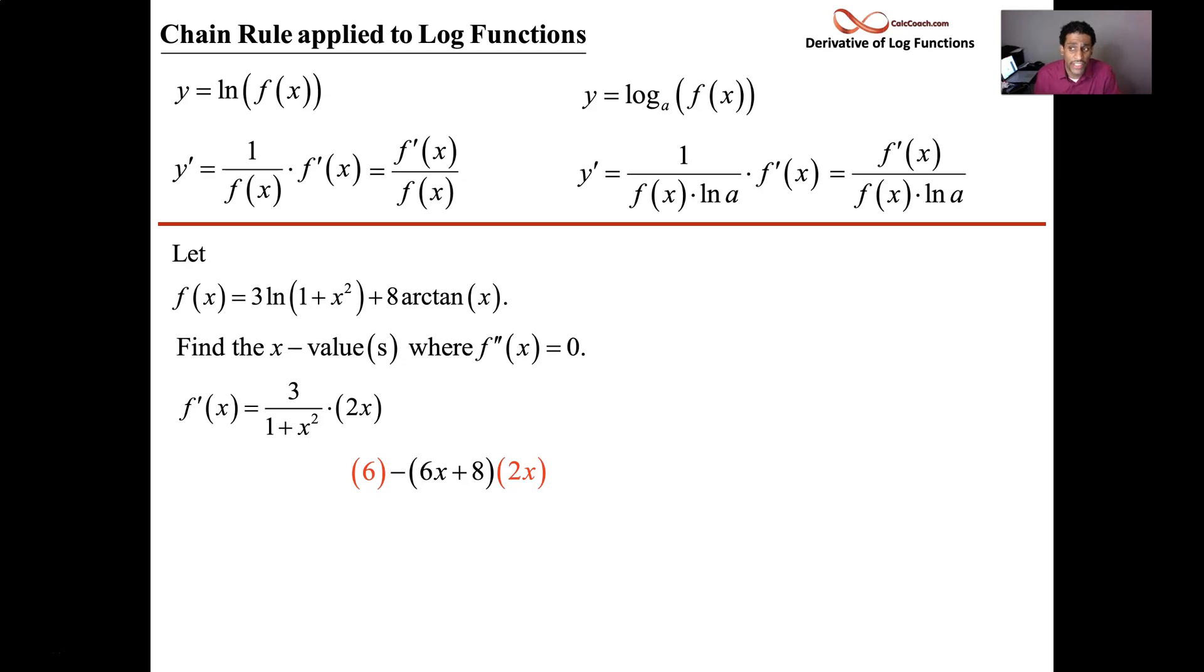There we have the first part's derivative. This question is asking us to take the second derivative and find out where it's equal to 0. So we've taken only half of the function's first derivative. There's this other half here, 8 times the arctan of x.